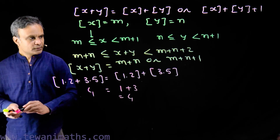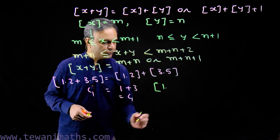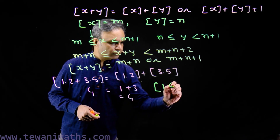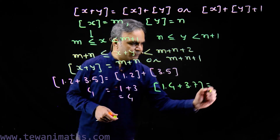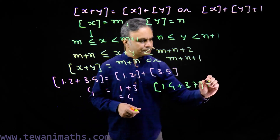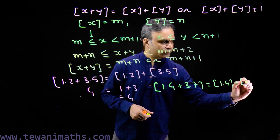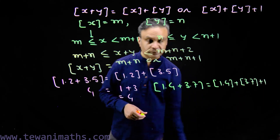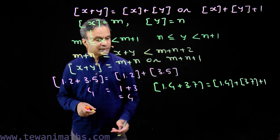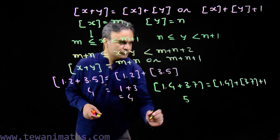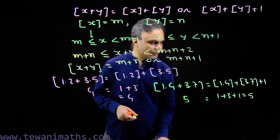And if we consider greatest integer of 1.4 plus greatest integer of 3.7 plus 1 — this sum is 5.1, so the greatest integer is 5. And here we have 1 plus 3 plus 1 is equal to 5.